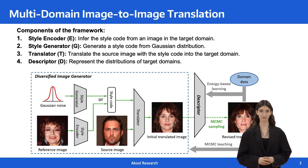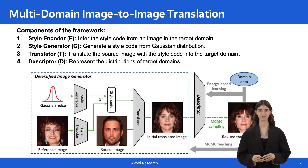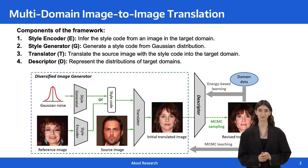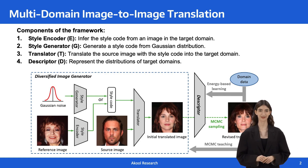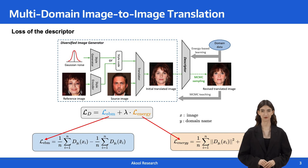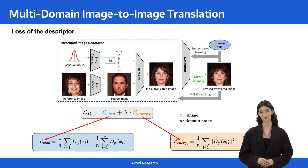All components are trained simultaneously in a cooperative learning scheme. The descriptor learns from the multi-domain training images by maximizing the data likelihood, while utilizing MCMC teaching to guide the training of the diversified image generator, which includes the translator, style encoder, and style generator. The cooperative learning alternates the maximum likelihood training of the descriptor and the diversified image generator.